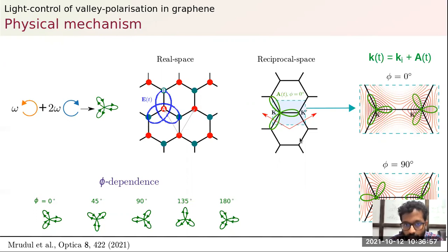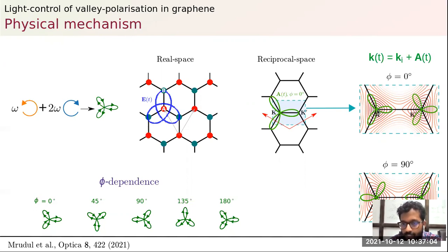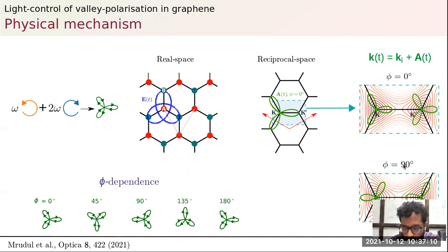The advantage of using this field is that it matches with only one of the valleys and not the other, and it effectively transfers population from one valley to the other. This transfer can be controlled using the relative phase.